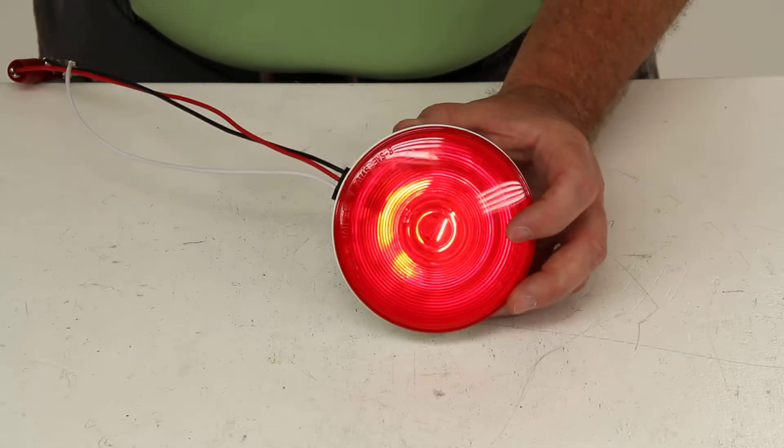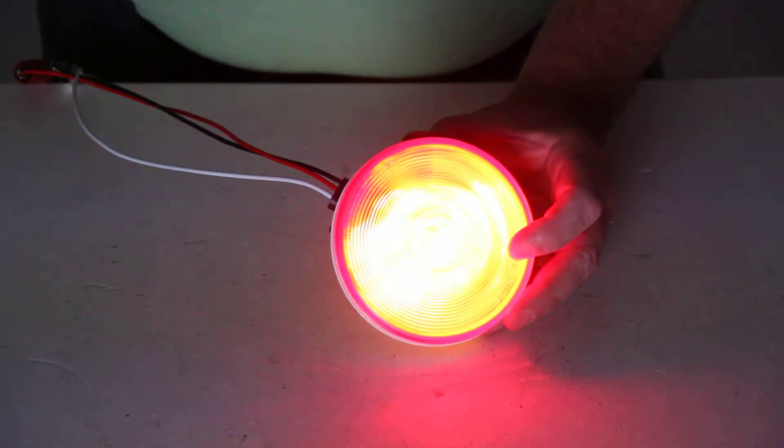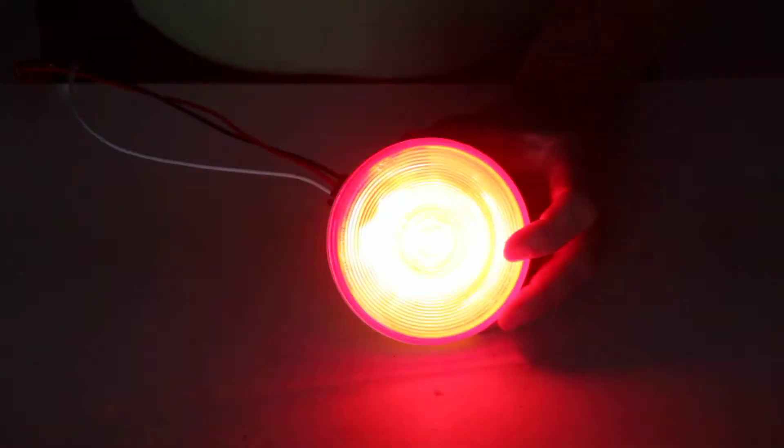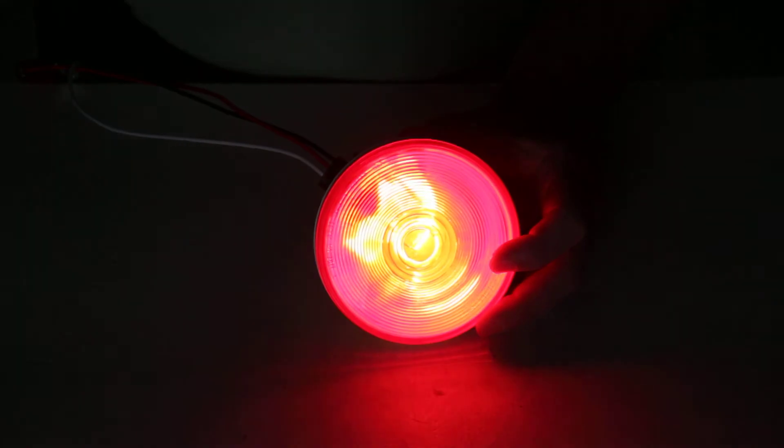And then I'm going to turn off the overhead lights to give you an idea of the brightness in the dark. This is the regular tail light function. And that will be the stop and turn function.